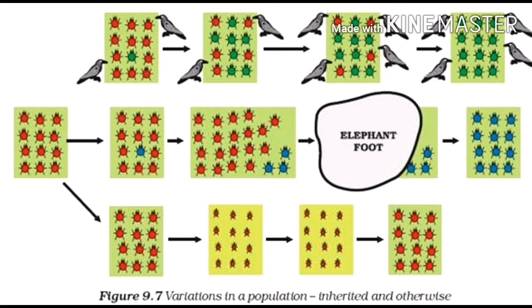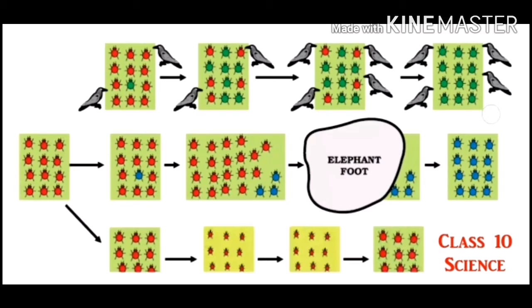Now let's study situation two. In the population of red beetles, a blue colored beetle appears by variations. But both blue and red colored beetles could be detected by crows on green leaves. Natural selection does not favor blue beetles over red. After few generations, beetle population had beetles of both colors.